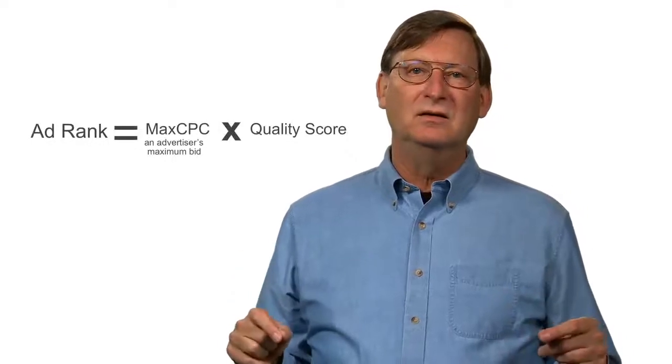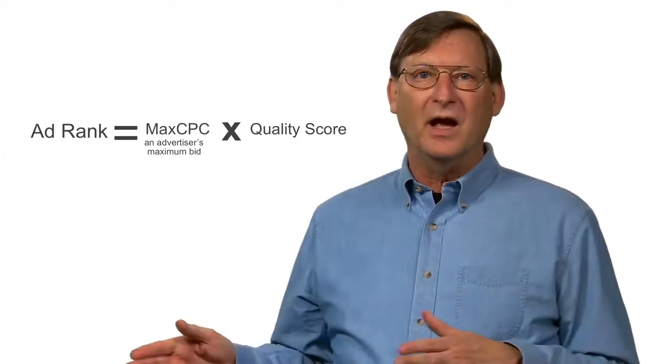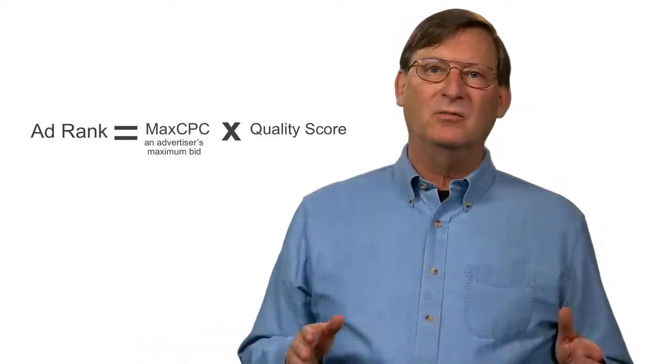To see this more clearly, let's look at how ad rank is calculated. For AdSense sites, ad rank is calculated by multiplying the advertiser's maximum bid by the quality score. So ad rank equals maximum CPC times quality score.